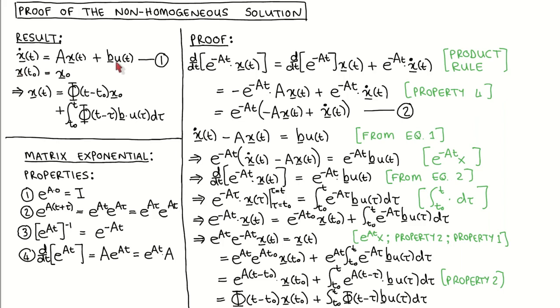We specify that the initial states at time t0 is given by vector x0. We want to prove that the solution to this is given by x of t equal to the state transition matrix with argument t minus t0 times x0 plus the integral in terms of tau from t0 to t of the state transition matrix with argument t minus tau times vector b times the input u of tau.